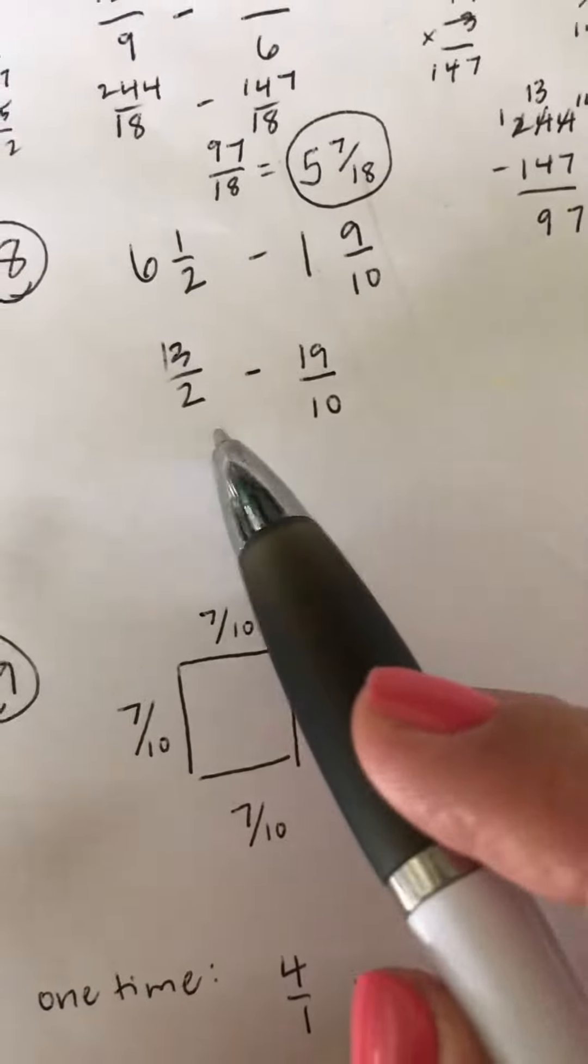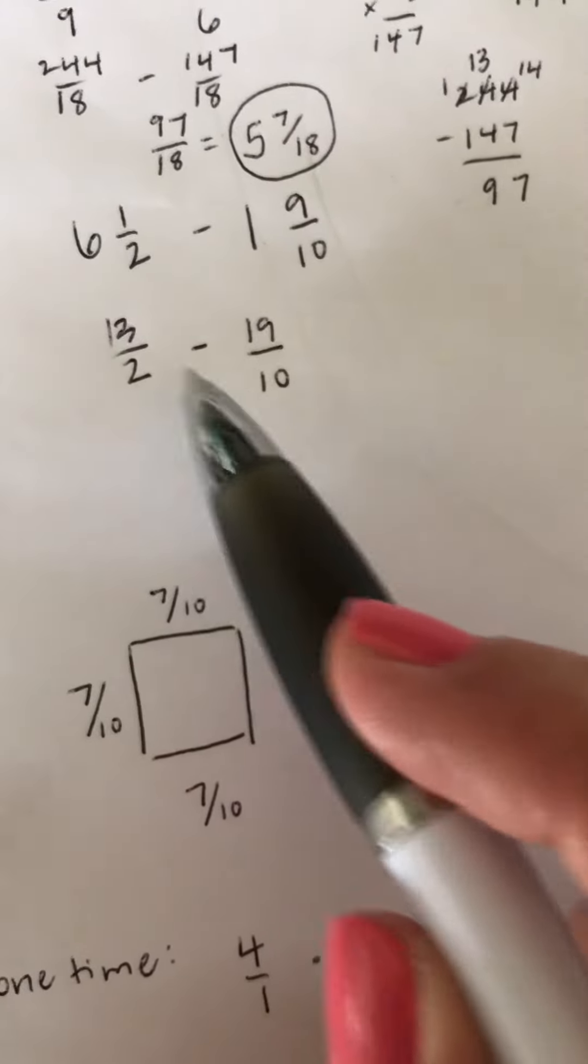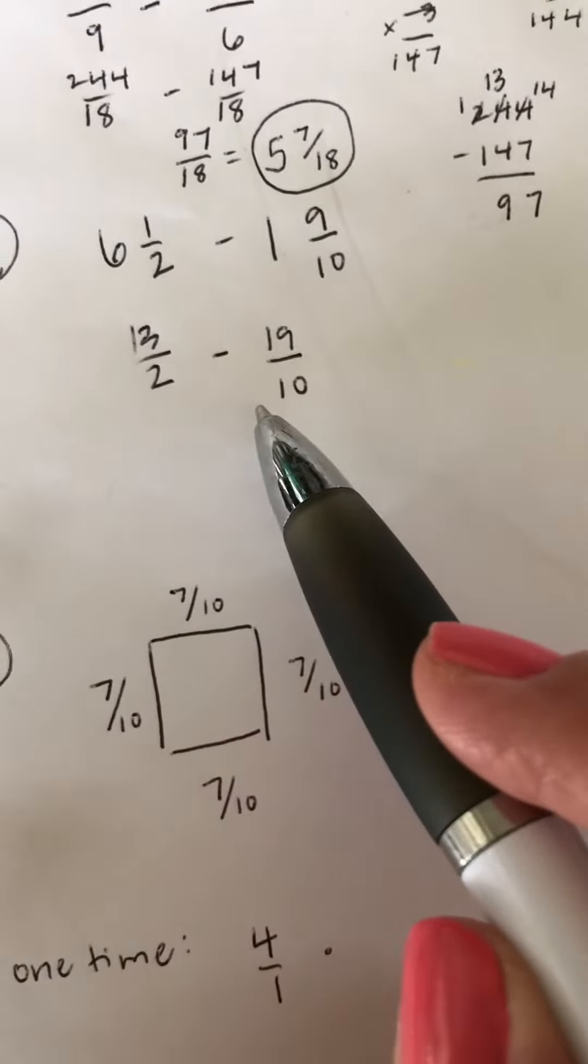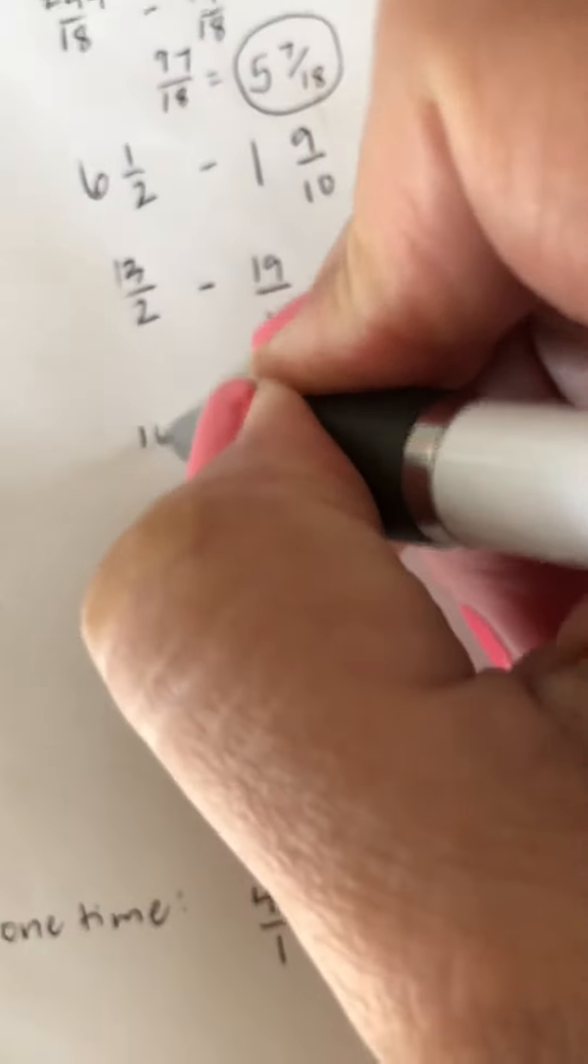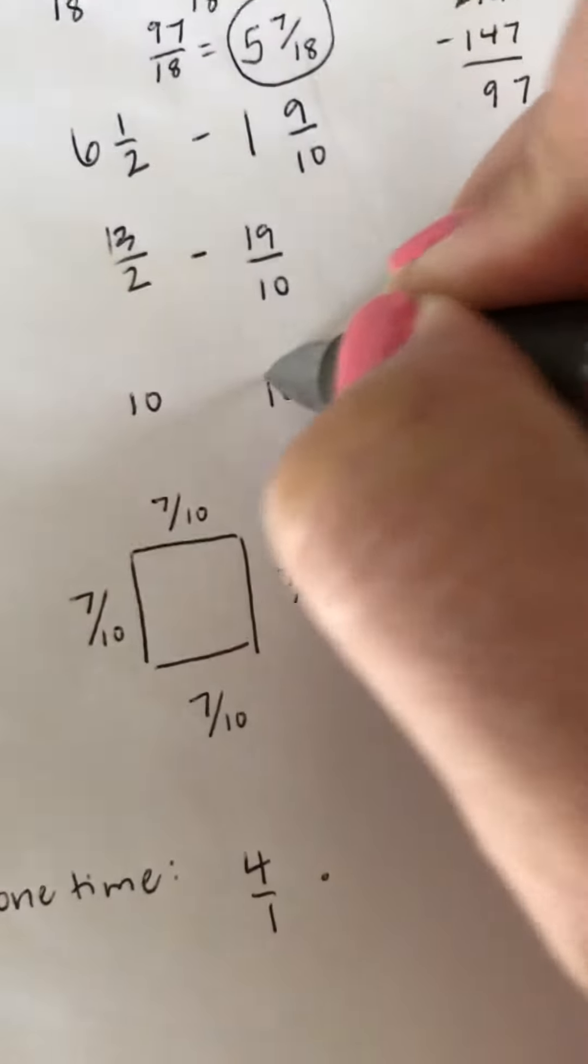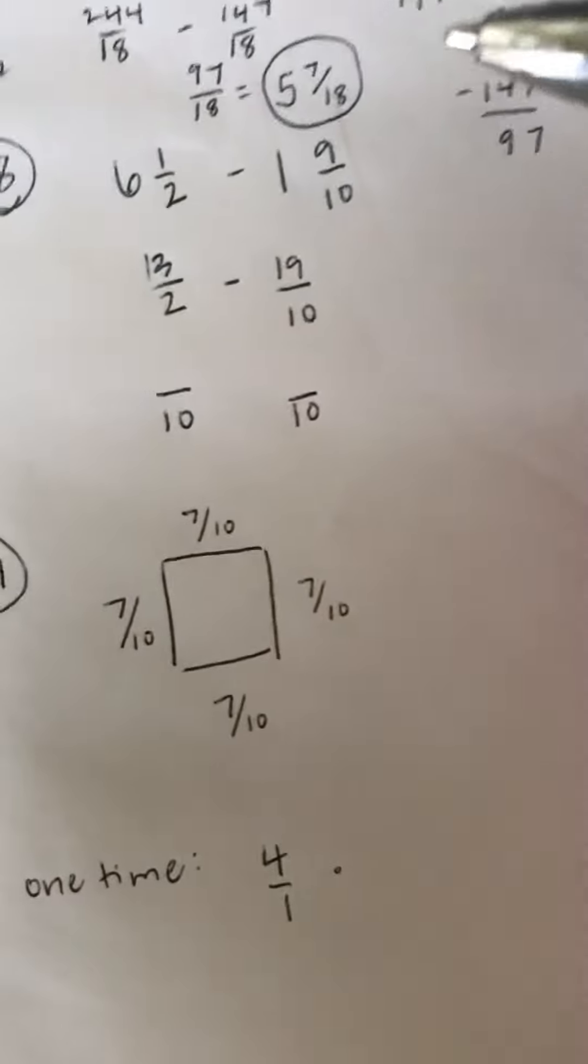Now with adding and subtracting fractions, you've got to have a common denominator. So we want to find the lowest number that 2 and 10 can both go into, which is 10. You could use 20. You could use any multiple of 2 and 10. You just would have to simplify at the end.